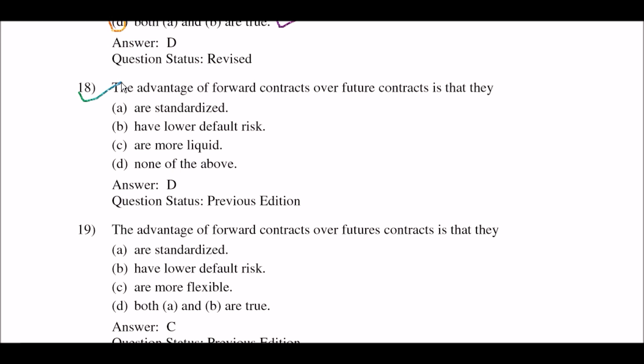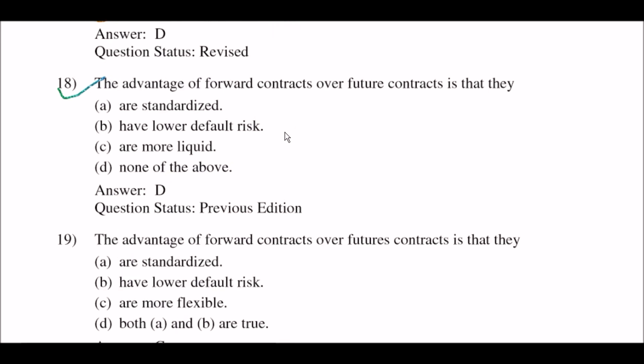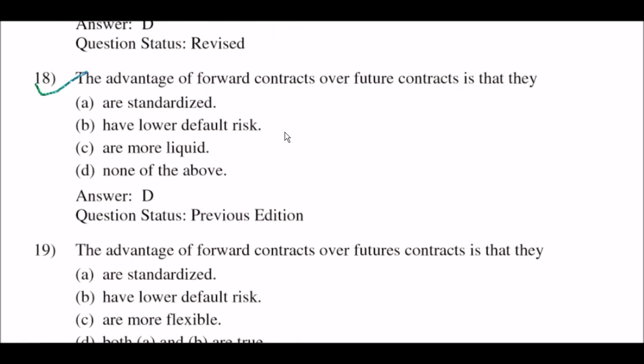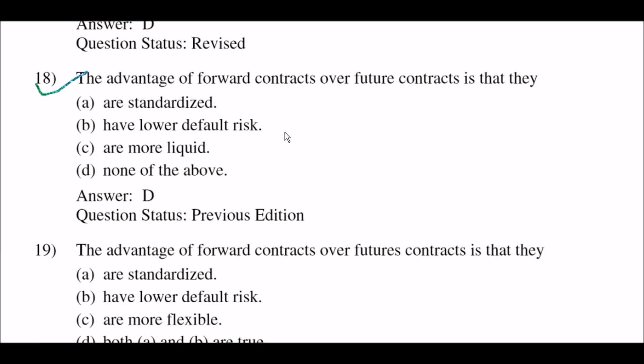Next question: the advantage of forward contracts over future contracts is that they — option A: are standardized; option B: have lower default risk; option C: are more liquid; option D: none of the above. The right answer is option D: none of the above.